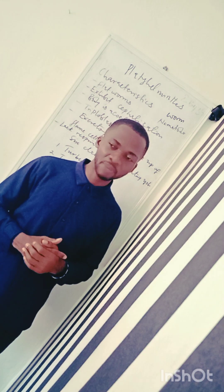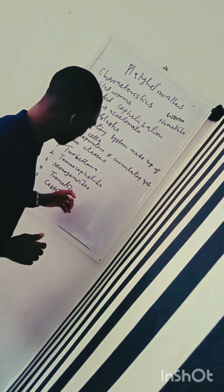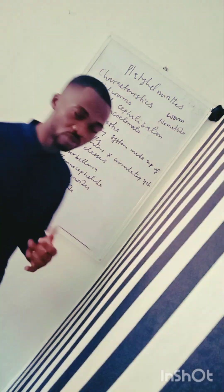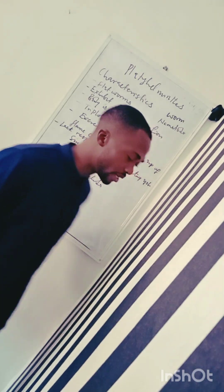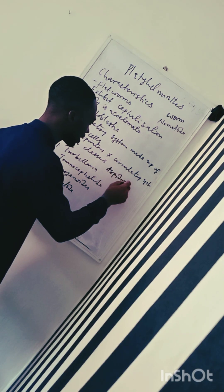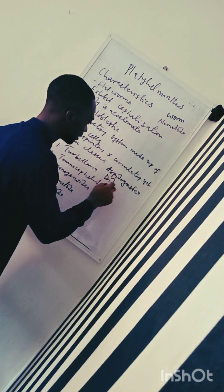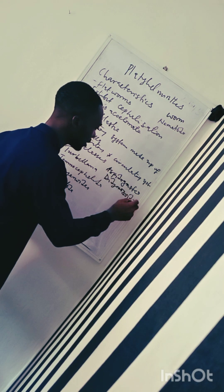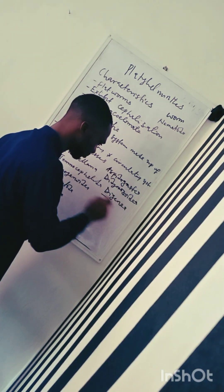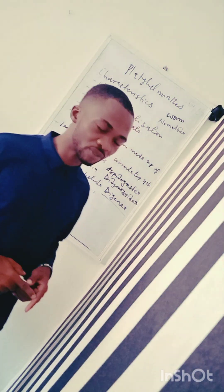Before I conclude, we will also look at the subclasses of members of Trematoda. Trematoda is a class. The subclasses are: Aspidogastrea, Didymozoidea, and Digenea. This Digenea is an important subclass of Trematoda.